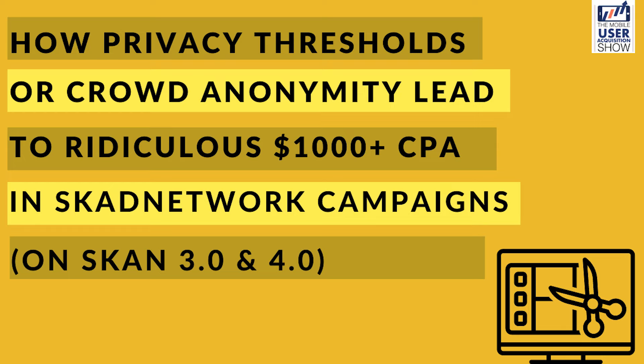How do you minimize the erosion or obfuscation of conversions? The guidance we've gotten from platforms so far is that you will have minimal censoring of conversions if you hit a threshold number of daily installs per campaign. For Facebook, this is 88 installs per day. For Snapchat, this is 75 per day. For TikTok, it's 90 per day. Bear in mind, these install counts are per campaign.